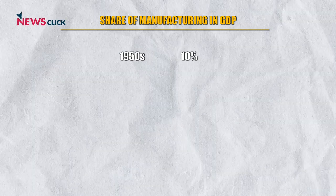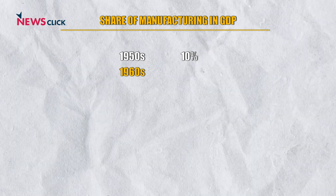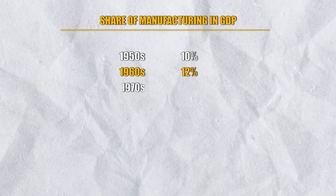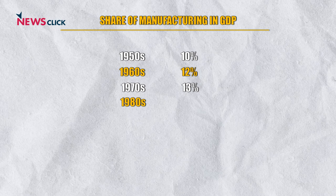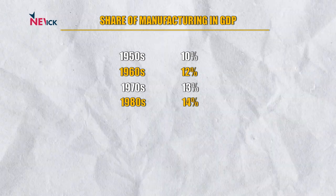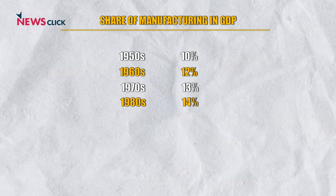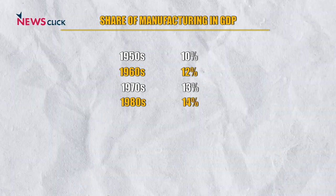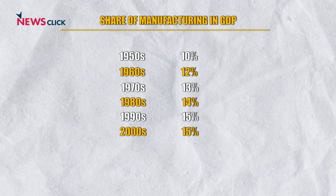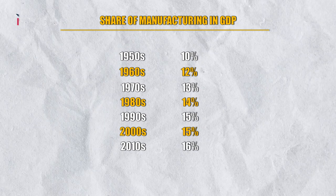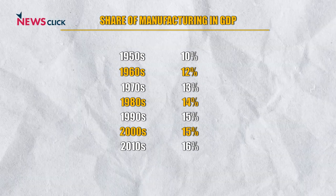As can be seen from this table, the share of manufacturing in total GDP increased at a steady rate before liberalisation: in the 1950s it averaged 10%, in the 1960s 12%, in the 1970s 13%, and in the 1980s 14% — rising by about one percentage point every decade. In the post-liberalisation period, manufacturing's share has grown at more or less the same pace as during the so-called socialist period.